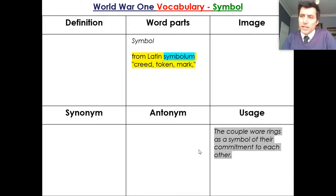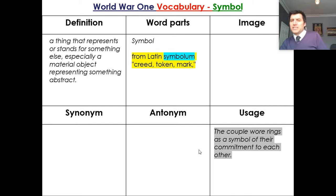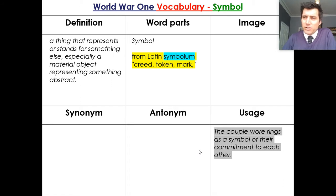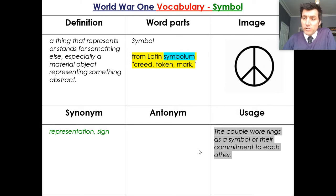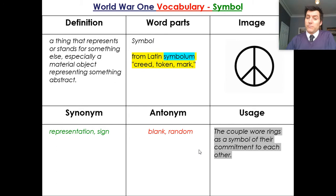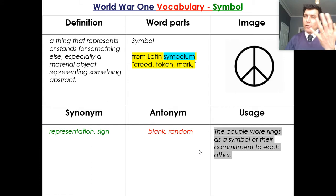We're thinking today about the word symbol and symbolism. The Latin word 'symbolum' was a creed, a token, or a mark — it represented something. A symbol is something that represents or stands for something else; it shows what something else means, especially a feeling or an abstract concept like love, anger, or a belief. An example might be a cross representing faith, or the 1960s and 70s anti-nuclear movement symbol representing peace. Synonymous with symbol would be sign or representation; the opposite would be blank or random — no image at all. A symbol I have in my life is my wedding ring, which symbolizes the commitment Mrs Spring and I made to each other when we got married. It doesn't really have a function — it represents something.